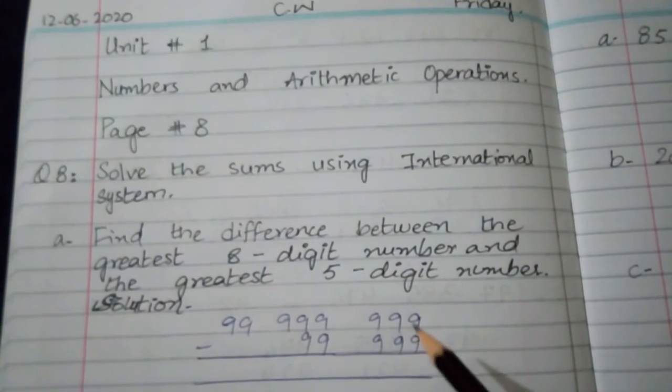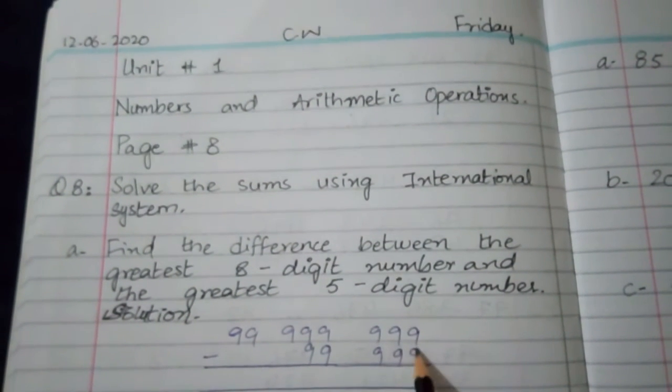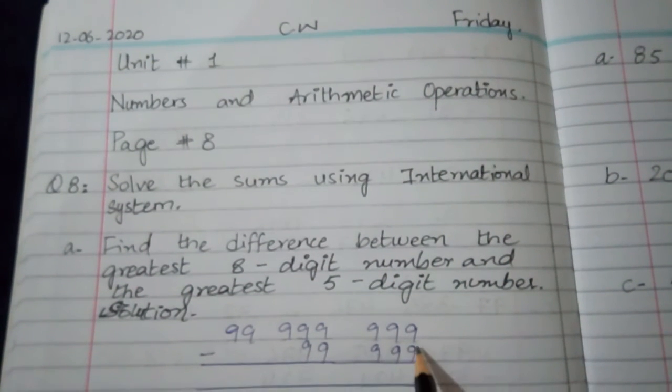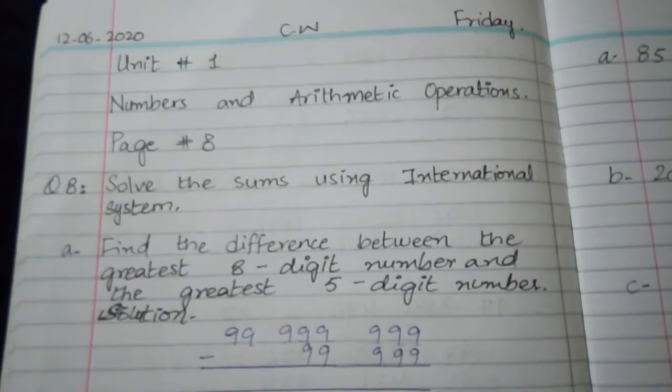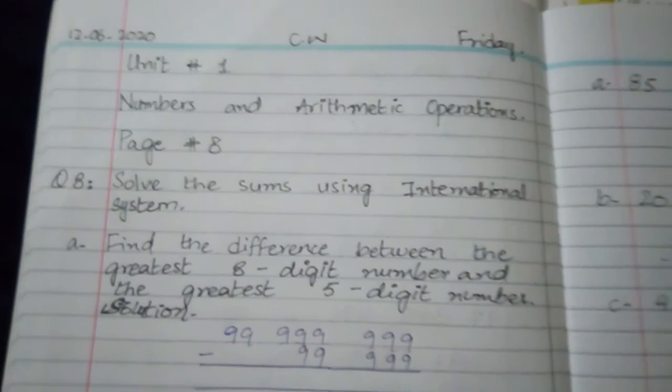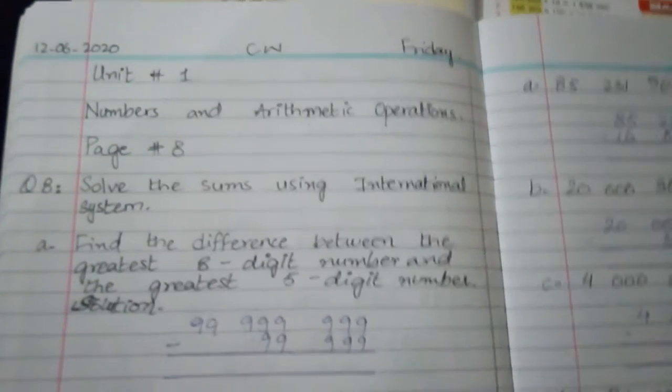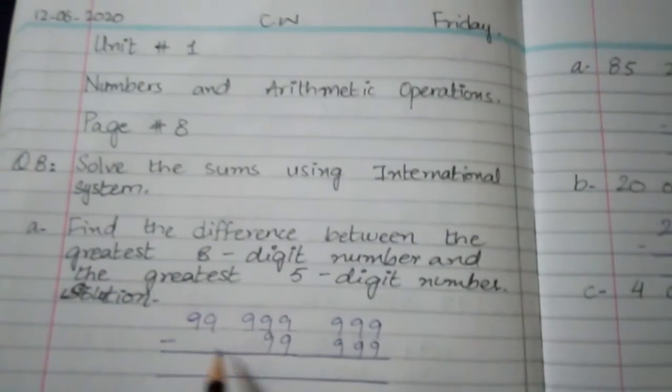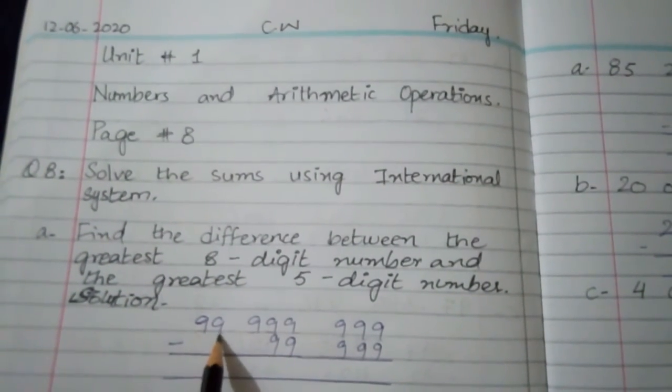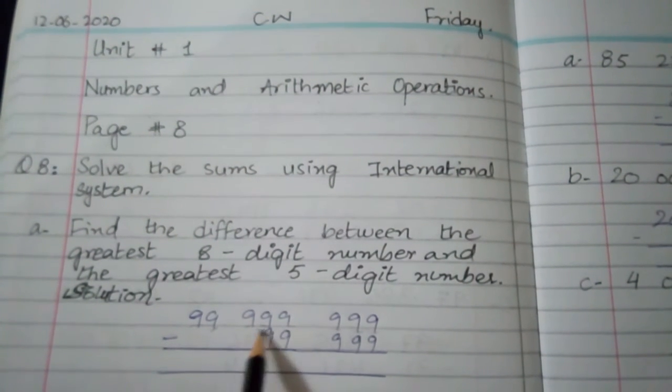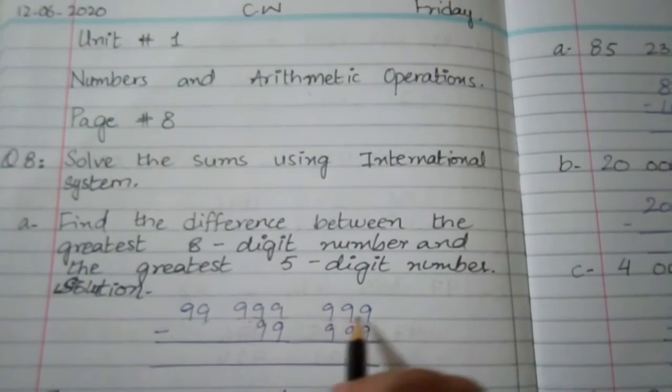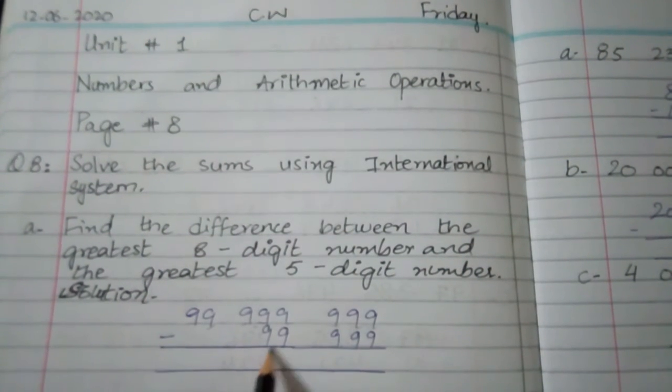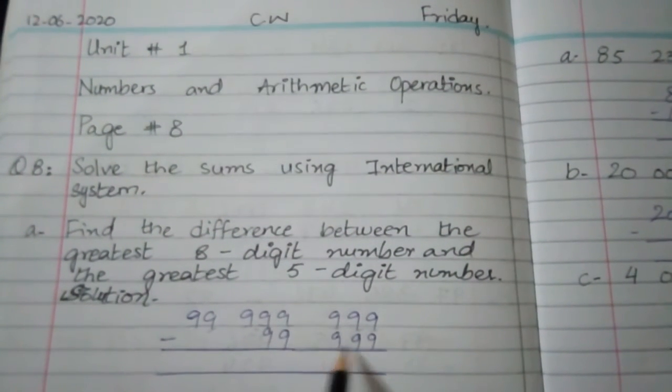What is the biggest 8-digit number? 99,999,999. What is the biggest 5-digit number? 99,999.